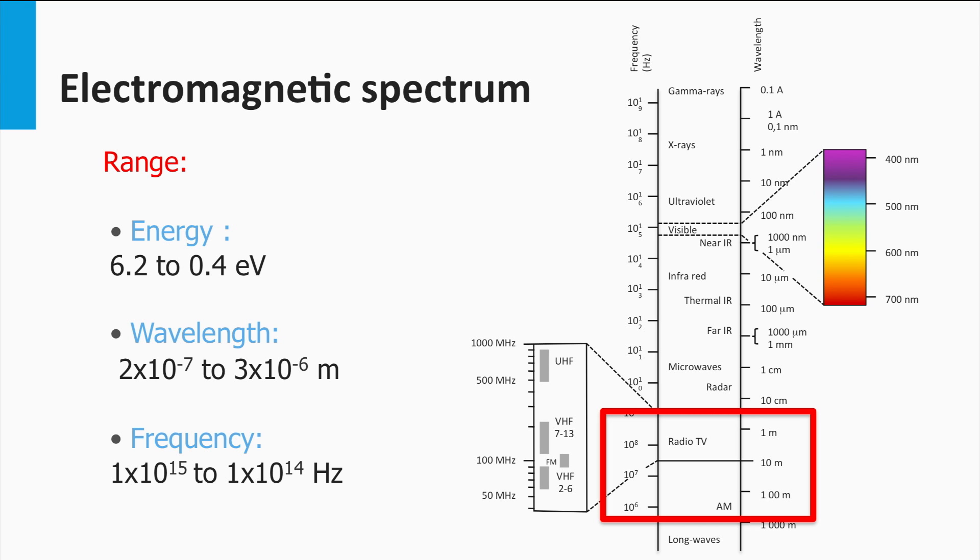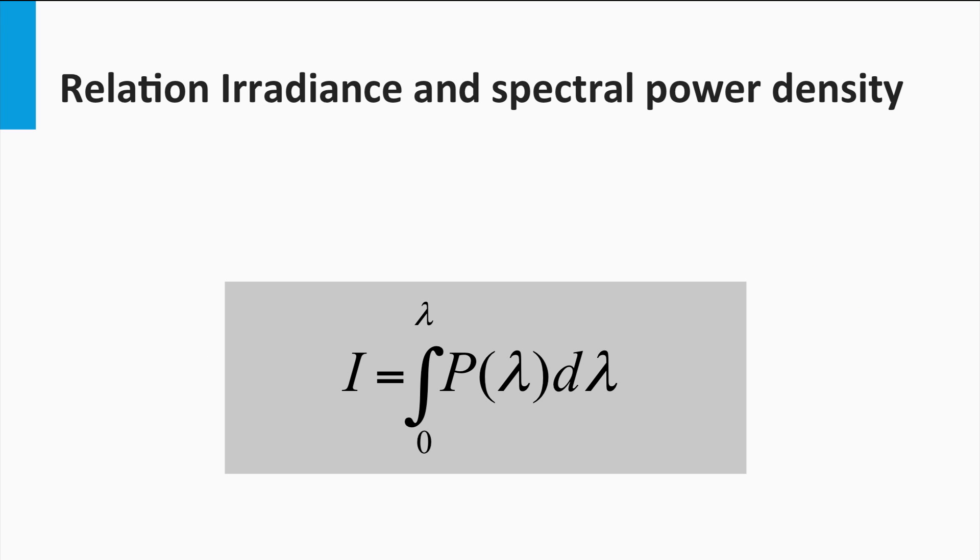The question now is, in which spectral range does the Sun irradiate light? For that I will introduce the quantities irradiance and spectral power density. Let's start with the irradiance. The irradiance is the power per unit area and is usually expressed in watts per square meter. The irradiance does not provide us any information about the spectral shape of the light source. In our course we give the irradiance the symbol I.